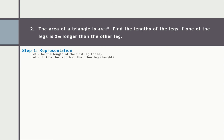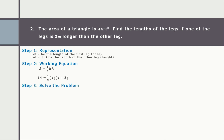For step two, we create our working equation. Since we are talking about the area of a triangle, the formula is A = ½ × base × height. The area is 44, the base is x, and the height is x + 3. So our working equation is: 44 = ½ × x × (x + 3).